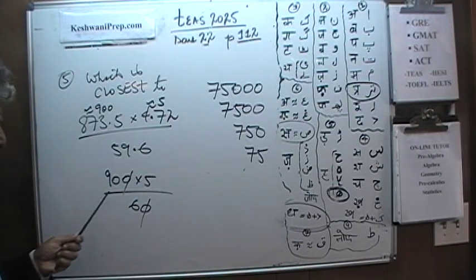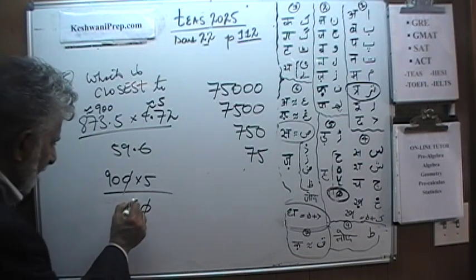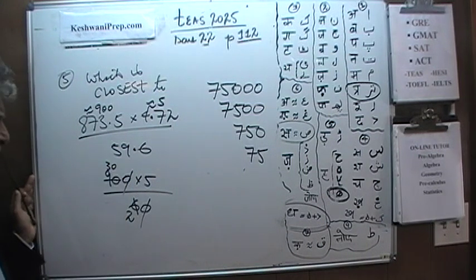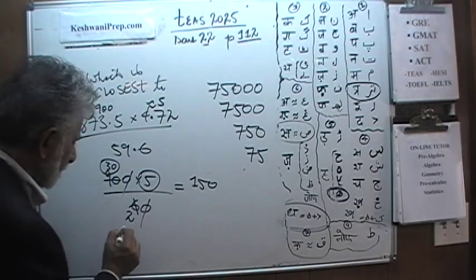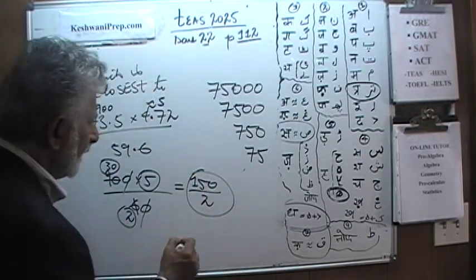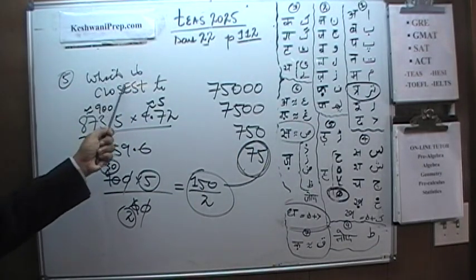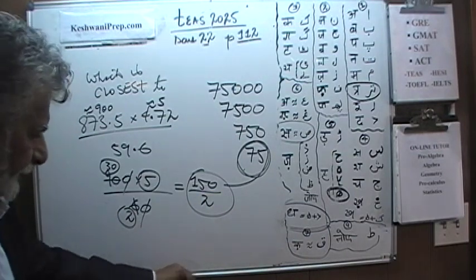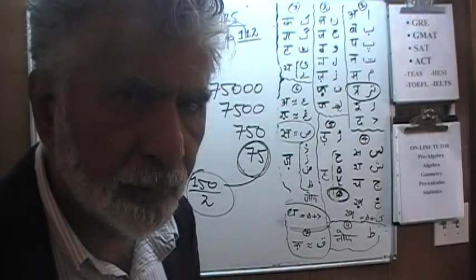So we have approximately 900 × 5 ÷ 60. Divide top and bottom by 10: we get 90 ÷ 6. Then divide top and bottom by 3: 90 ÷ 3 = 30 and 6 ÷ 3 = 2. So we have 30 × 5 = 150 on top and 2 on the bottom. 150 ÷ 2 = 75. The closest approximation to this quantity is 75. We'll call it a day — we'll meet again tomorrow. Bye.